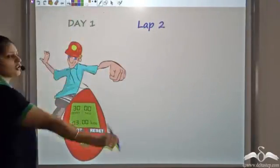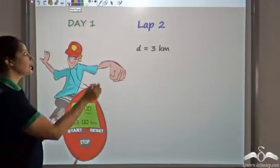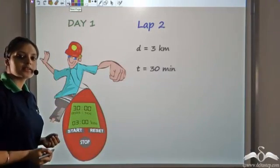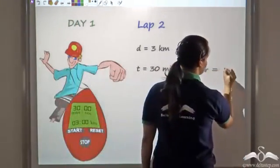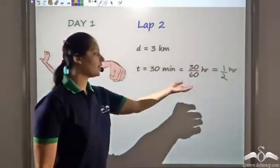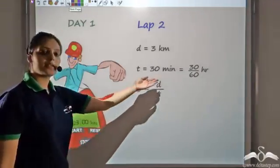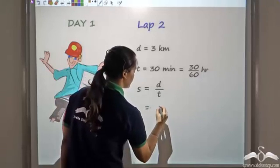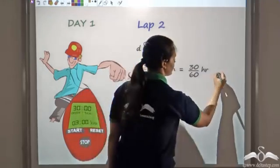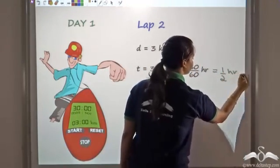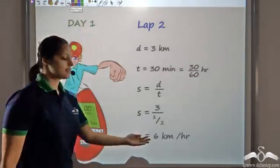Now let's look at the second lap. The second lap was exactly the same — he again covered 3 km distance and took 30 minutes. Now 30 minutes is the same as 30 by 60 hours, which is equal to half hour. So he took half an hour again to complete that same 3 km distance. So speed again would be distance by time, which gives us 6 km per hour.